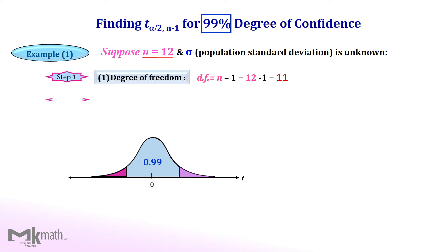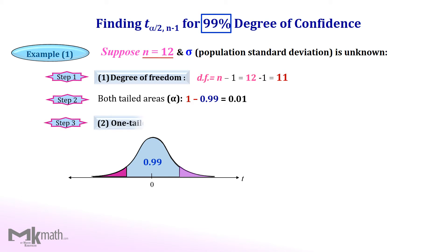Step 2: find both tailed areas by subtracting the confidence level 0.99 from 1 to get 0.01. Step 3: find the one-tailed area by dividing 0.01 in half, which becomes 0.005.